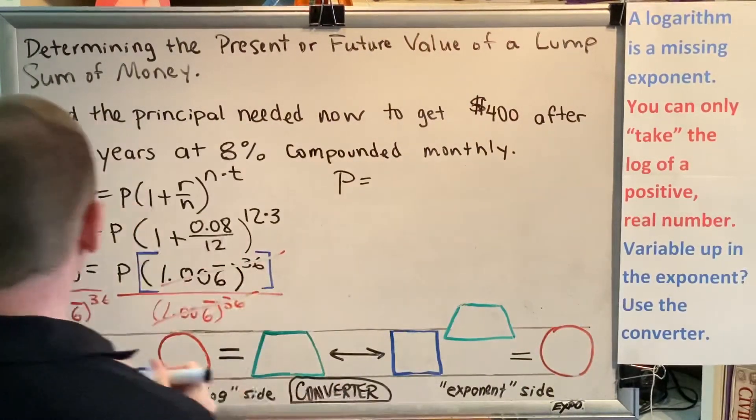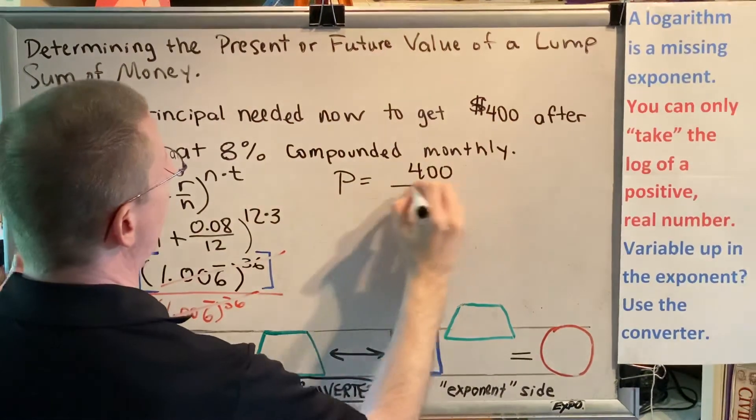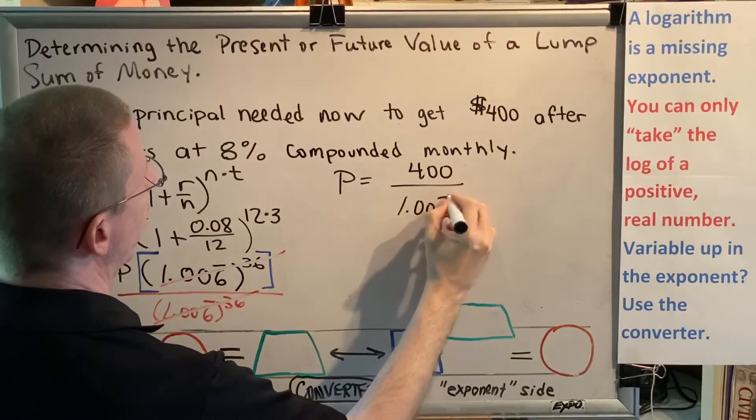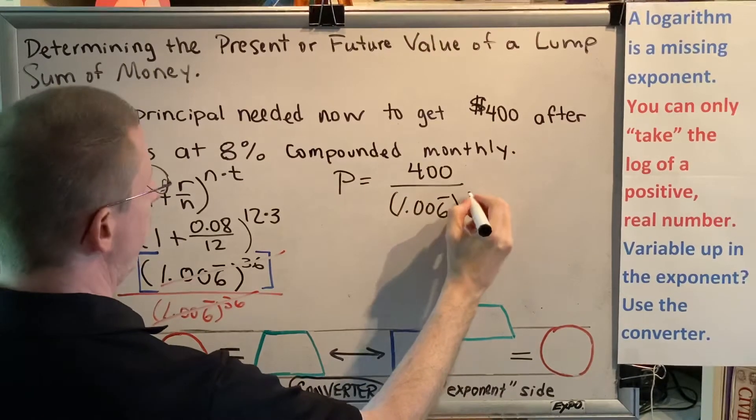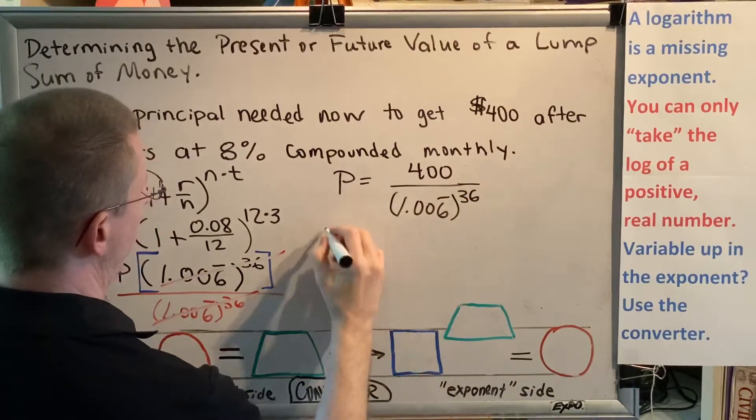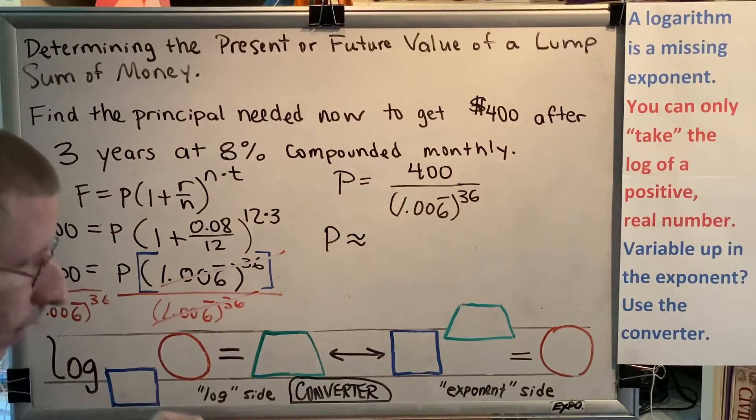So P is exactly equal to 400 divided by 1.006 bar raised to the 36th power. And all I have to do now is put this in my calculator. Let's do it.